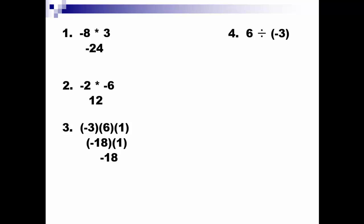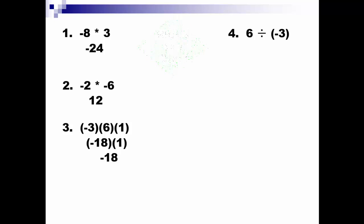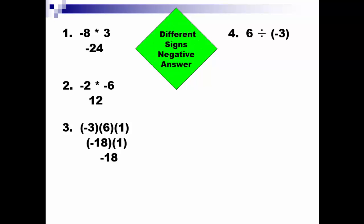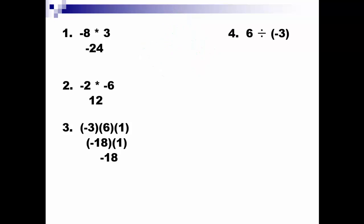Next example — now we're going to try some division problems. 6 divided by negative 3. The first thing you ask yourself: what's the rule? When I'm dividing, signs are different, so the answer is negative. A positive divided by a negative will be a negative. 6 divided by 3 is 2, so that answer is negative 2.